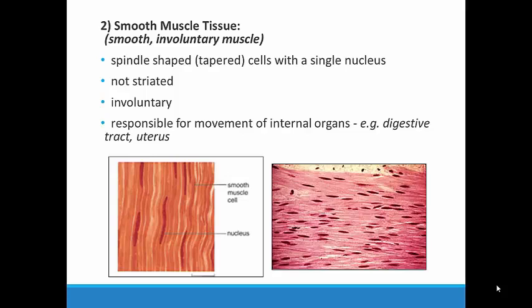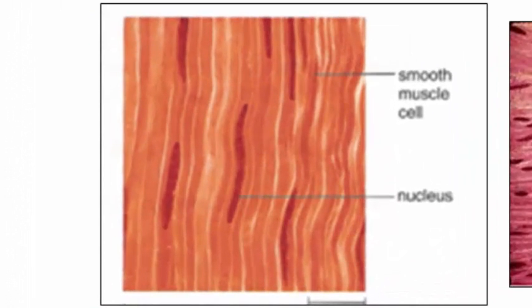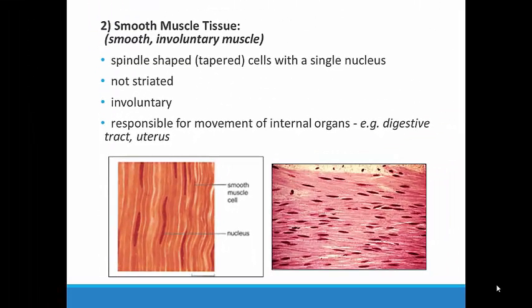Smooth muscle tissue looks different than skeletal muscle and it performs a different function in the body. The cells are long with ends that narrow down and they contain only a single nucleus. The two features of smooth muscle are opposite to skeletal muscle: smooth muscle is not striated and it is involuntary. You can see from the diagram that the fibers do not form the same regular light and dark patterns as skeletal muscle, which is just a difference in how the actin and myosin are organized. Smooth muscle is responsible for all sorts of movements in our body that we don't want to have to think about, for example, our entire digestive tract, which is responsible for moving food through from esophagus to rectum.